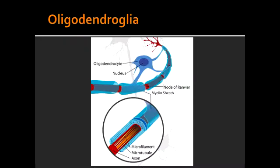How does oligodendroglia appear under Nissl stain? Under Nissl stain, they appear as small nuclei with dark chromatin and little cytoplasm. One additional note is that oligodendroglia are the predominant type of glial cells in the white matter.